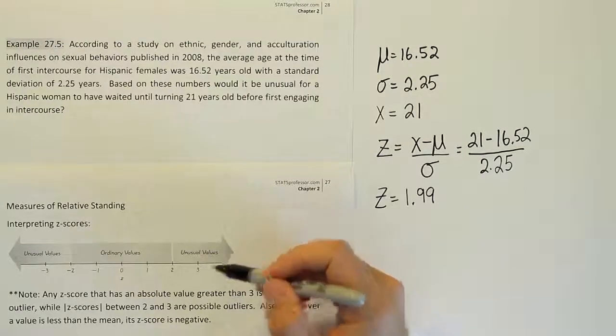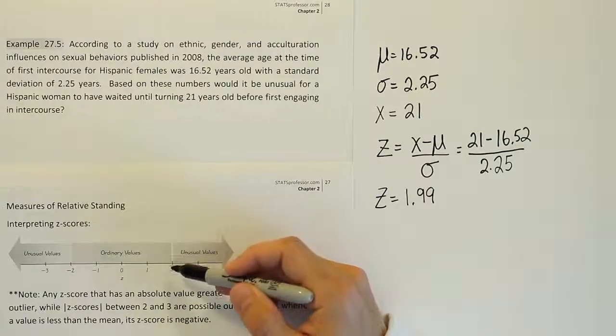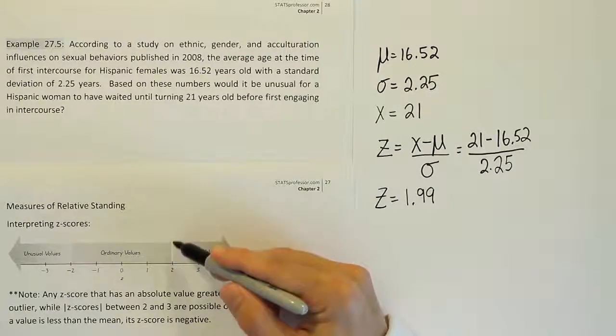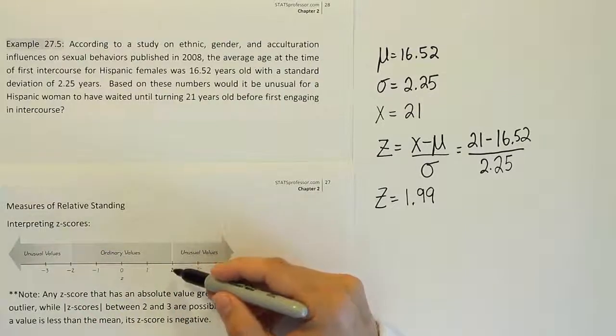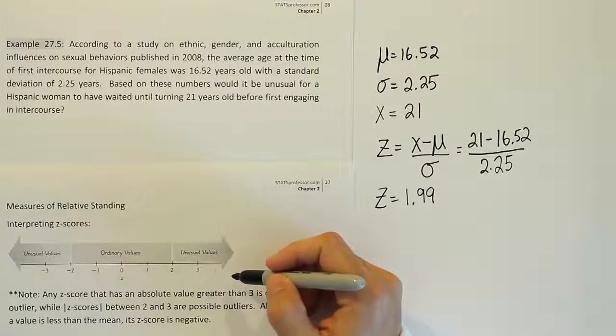So the fact that it's right on the line close to 2, we would not consider it unusual yet because even 2 is only borderline unusual. As we move further down the line, it gets more and more unusual and it's very clear to say that something is, say, like 4, a z-score of 4 or 5 would be clearly unusual.